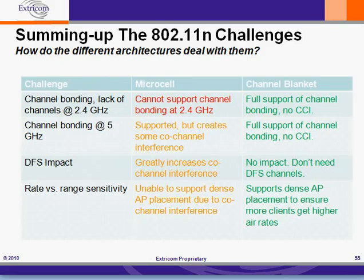Summing up the challenges of 802.11n, the question is: how do the different architectures deal with them? The first challenge is channel bonding at 2.4GHz. In microcell architectures, this is not supported at all — there's just no way to support channel bonding in the 2.4GHz band. On the other hand, the channel blanket provides full support of channel bonding, because there's no co-channel interference.